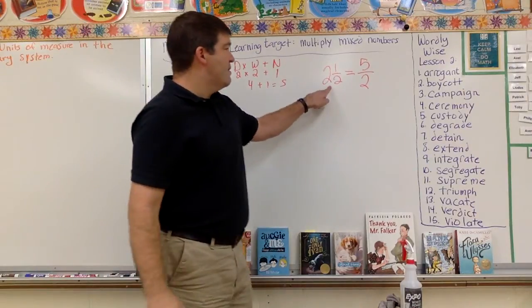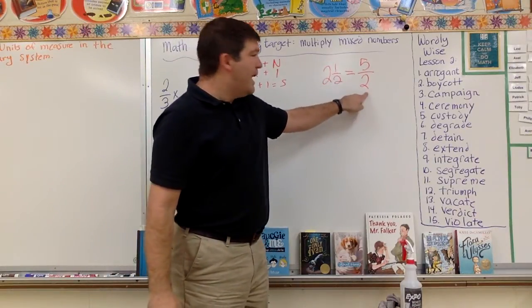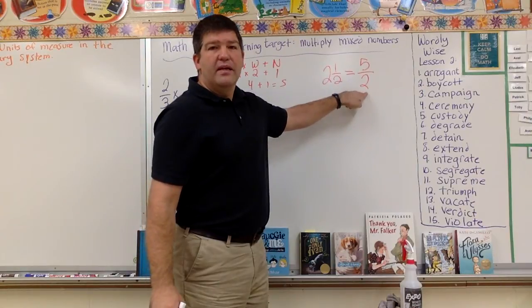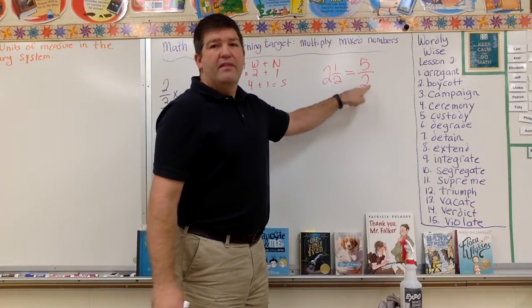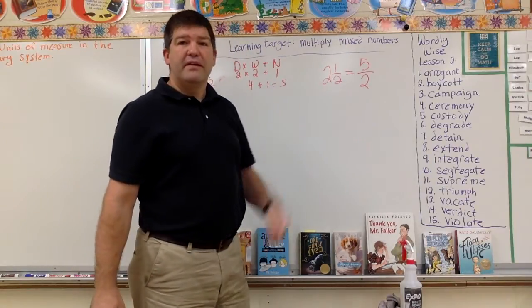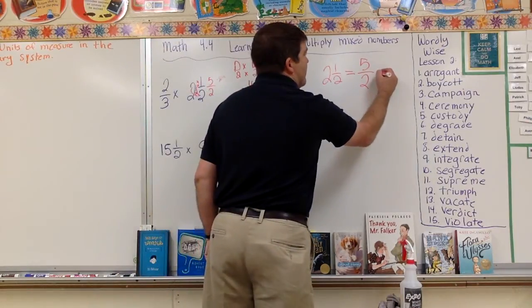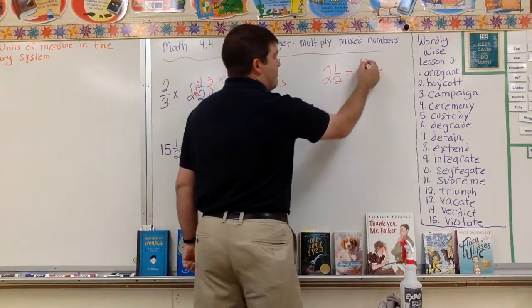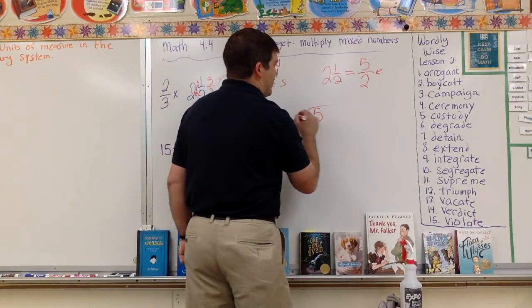Now I have this mixed number put back into an improper fraction. If I ever have an improper fraction, I can put it into a mixed number by dividing. Five divided by two.